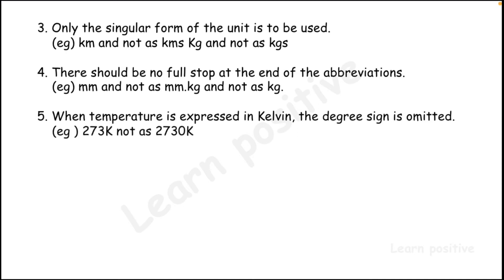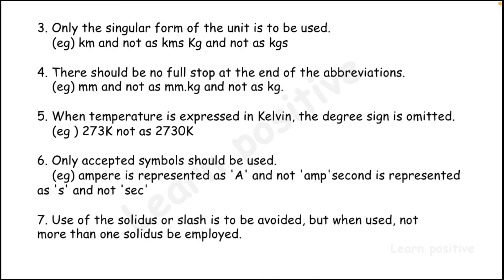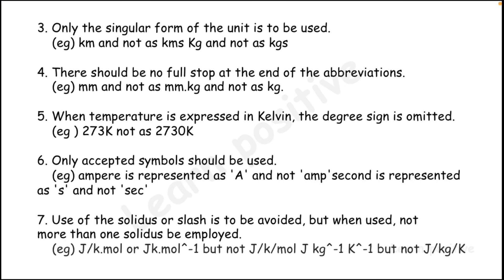The fifth convention: when temperature is expressed in kelvin, do not use the degree sign — write '273 K', not '273°K'. The sixth: only accepted symbols should be used — for ampere, use 'A', not 'amp'; for second, use 's', not 'sec'. The seventh: use of solidus or slash should be avoided; when used, not more than one solidus should be employed — for example, write 'J·K⁻¹·mol⁻¹' rather than 'J/K/mol'.